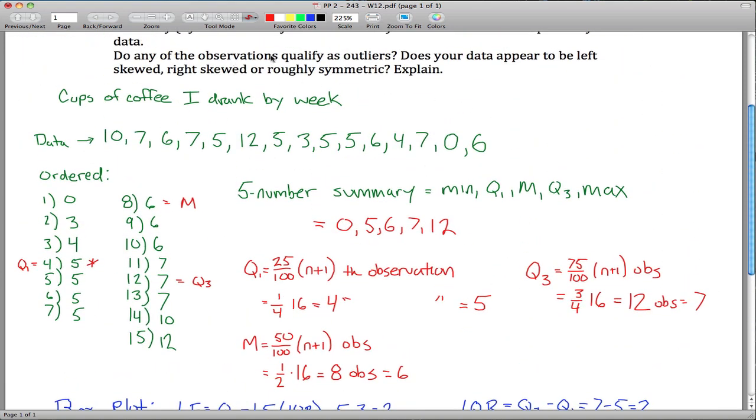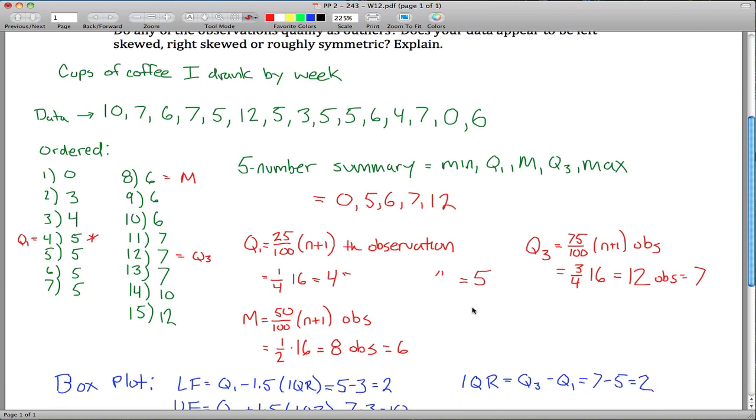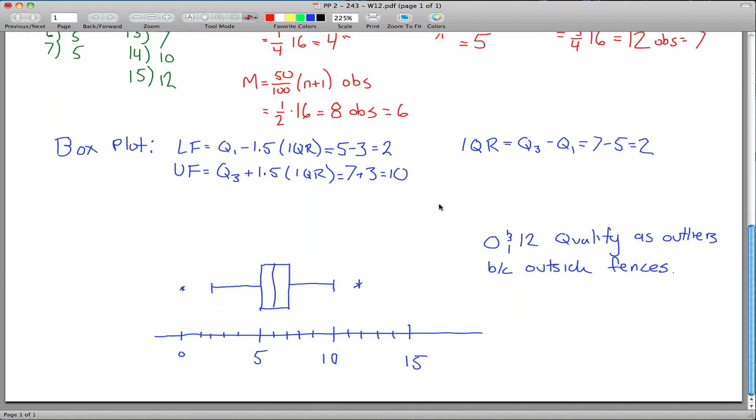Does my data appear to be left skewed, right skewed, or roughly symmetric? Well, this will be different for everyone, but for me this looks pretty symmetric if you look at this picture right here. The median is right down the middle of my quartiles. These fences extend out maybe the exact same or at least close to the exact same distance. So I would say data appears roughly symmetric.